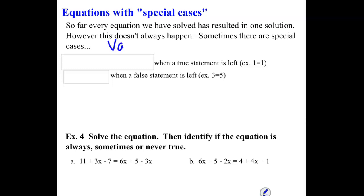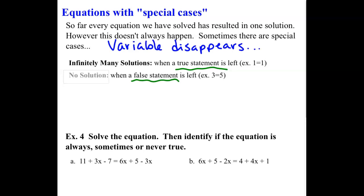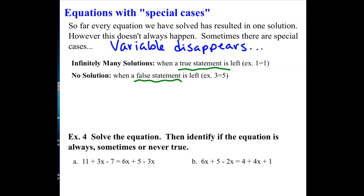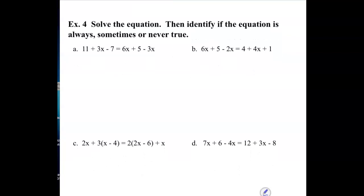There's two situations. When your variable disappears, you have to determine what you have remaining - if you have a true statement or if you have a false statement. If there's a true statement, it means you have infinitely many solutions. If you have a false statement, it means you have no solution. So let's look at some examples of this. We want to solve this and determine what type of solution we have - is it always going to be true, sometimes true, or never true? Always true means there's an infinite number of solutions. Never true means there's no solution that will work. Sometimes that's when we get a solution, something like we solve and we get x equals 4. Our variable doesn't disappear. We still are able to find it.